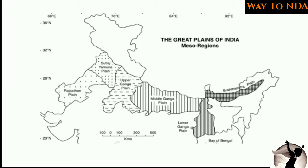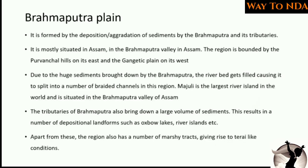The Brahmaputra Plain is found in the northeastern part of India. It is formed by the deposition and aggradation of sediments by the Brahmaputra and its tributaries. It is mostly situated in the Assam region, mainly in the Brahmaputra Valley. The Brahmaputra brings a lot of sediments along with it and forms a braided channel.